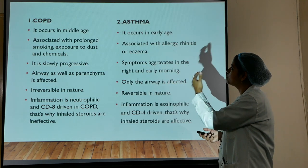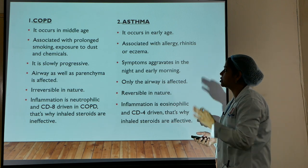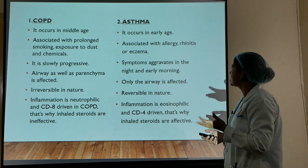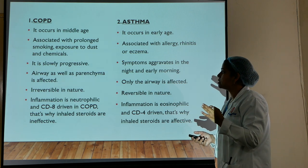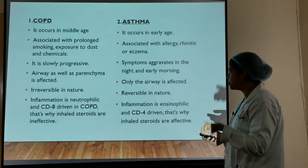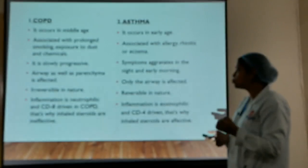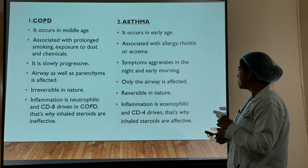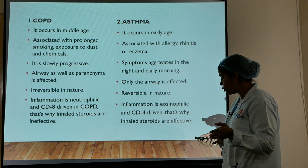Key differences between COPD and asthma: COPD occurs in middle age while asthma occurs in early age. COPD is associated with prolonged smoking and exposure to dust and chemicals; asthma is associated with allergies, rhinitis, and eczema. COPD is slowly progressive; asthma symptoms aggravate at night and morning with seasonal variations. In COPD, both airway and parenchyma are affected and it is irreversible; in asthma, only the airway is affected and it is reversible. COPD inflammation is neutrophilic and CD8-driven, making inhaled steroids ineffective; asthma inflammation is eosinophilic and CD4-driven, making inhaled steroids very effective for pre-operative optimization.